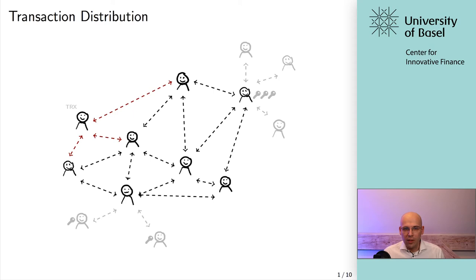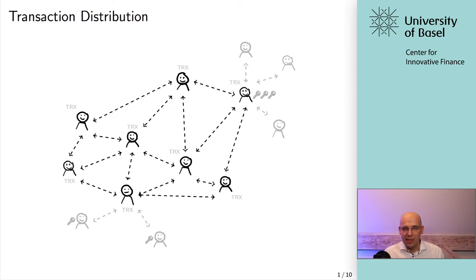Let's assume this node has a transaction, has it verified, and then its peers request the transaction, so it gets transferred and they also have a copy. Then their peers also request the transaction, as we've seen in previous lectures, and they also know about it — until the entire network knows about this transaction. But once again, although at this point almost everyone knows about it, it still is not part of the blockchain. It's just in these local transaction queues or mempools, awaiting confirmation, awaiting to be included in the blockchain.